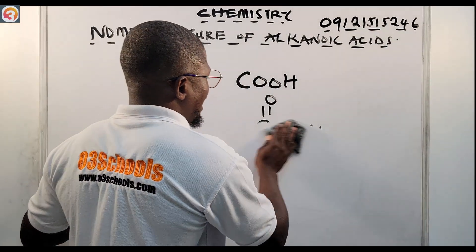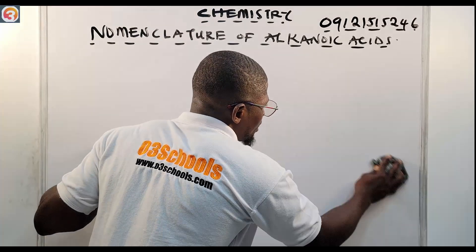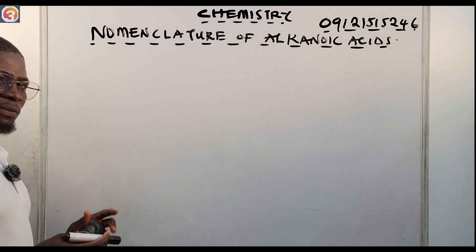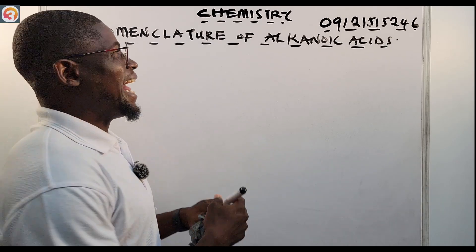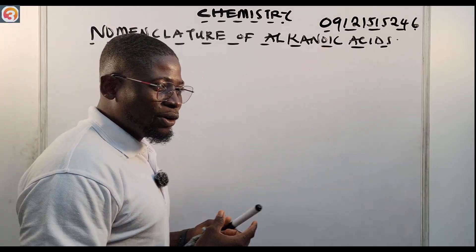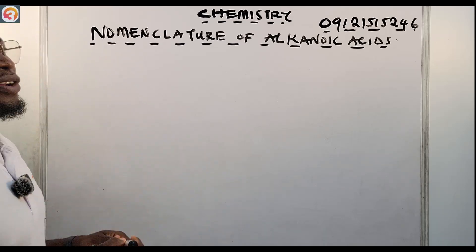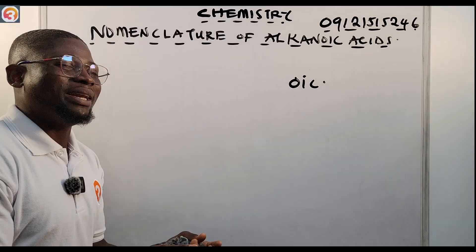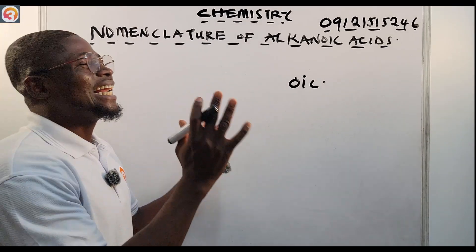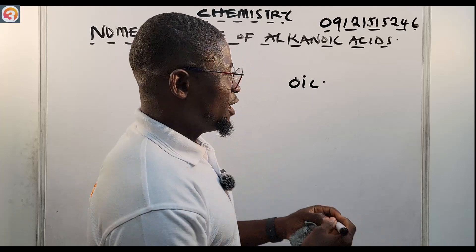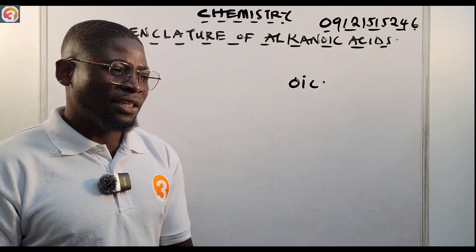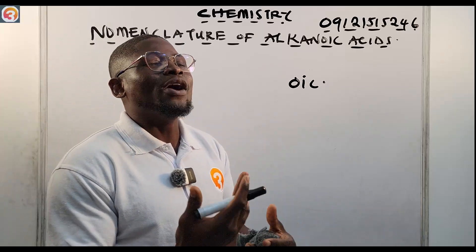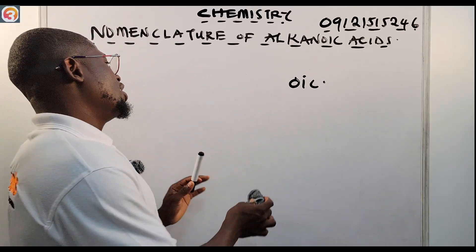Let us see the nomenclature of alkanoic acids. They have the functional group COOH. Alkanoic acids always end in -oic, so the simplest or first member of the alkanoic family is methanoic acid, then ethanoic acid, propanoic acid, butanoic acid — they always have that -oic at the end.